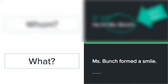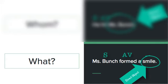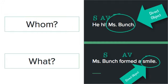Let's take a look at another one. We can ask the question 'what' to find the direct object. Miss Bunch is our subject, formed is our verb — it's an action verb. So we could say, Miss Bunch formed what? Smile. So smile in this case would be the direct object. Remember, a, an, and the — those are articles and they are not a part of the direct object.